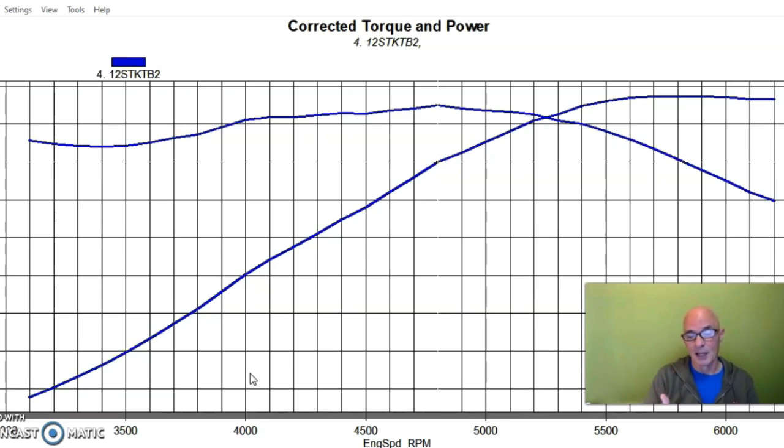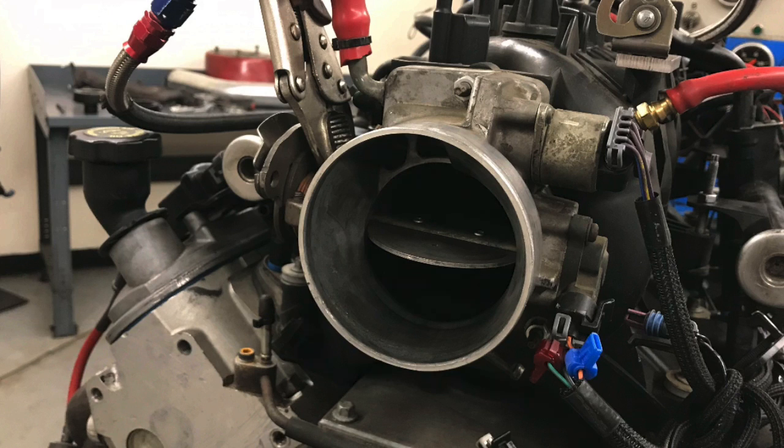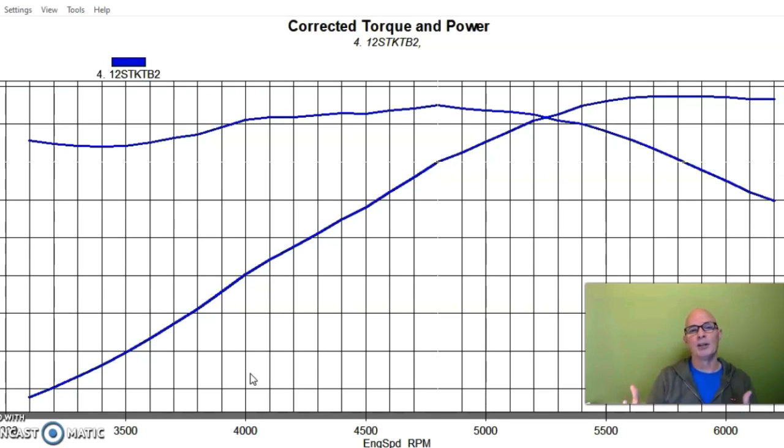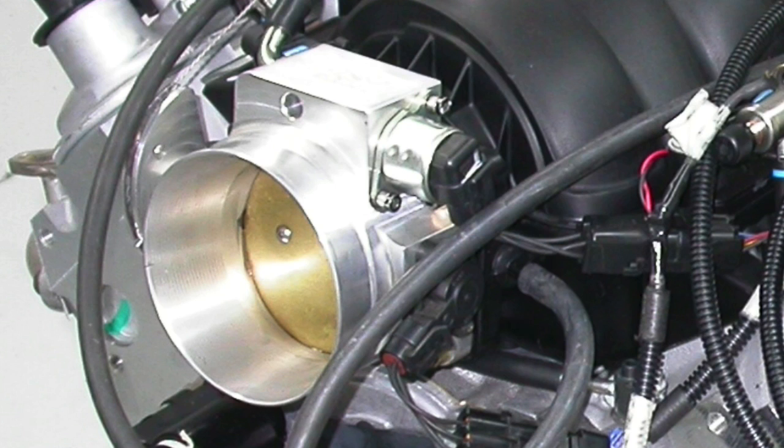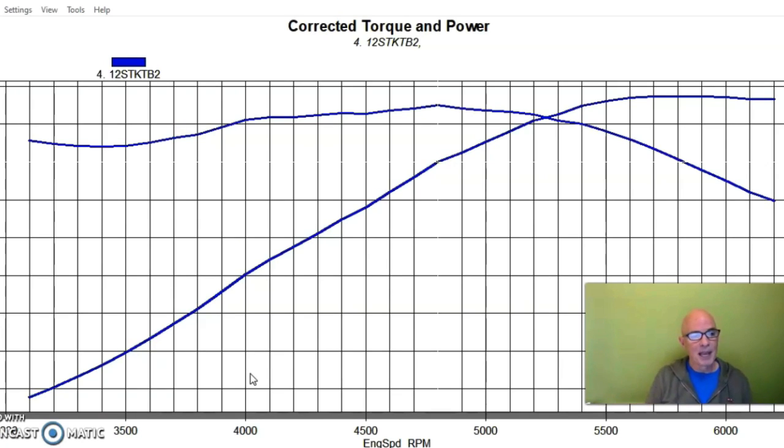Basically the easiest way to understand this is you need a throttle body when a throttle body is the restriction. If the throttle body itself is not the restriction in power output, like if the throttle body will already support the amount of power that you're making, you're not going to gain any power. The other thing to talk about here real quickly is that you should match the throttle body size to the inlet of the intake manifold. It doesn't do any good to have a 78 millimeter opening in your manifold like in the stock LS1 or LS6 manifold and then try to put 105 or 102 millimeter throttle body or even a 90 millimeter throttle body on there.